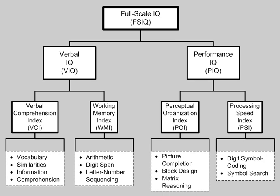The WAIS-R, a revised form of the WAIS, was released in 1981 and consisted of six verbal and five performance subtests. The verbal tests were: information, comprehension, arithmetic, digit span, similarities, and vocabulary. The performance subtests were: picture arrangement, picture completion, block design, object assembly, and digit symbol. A verbal IQ, performance IQ, and full-scale IQ were obtained. This revised edition did not provide new validity data, but used the data from the original WAIS; however, new norms were provided, carefully stratified.